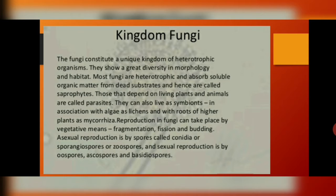Lichens are equal to algae plus fungi. Fungi also associate with the roots of higher plants, forming mycorrhizae. Reproduction in fungi takes place by vegetative means — fragmentation, fission, and budding. Asexual reproduction is by spores called conidia, sporangiospores, or zoospores. Sexual reproduction is by oospores, ascospores, and basidiospores.